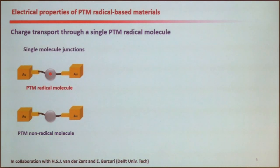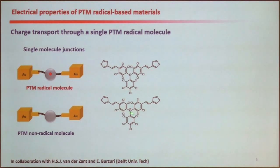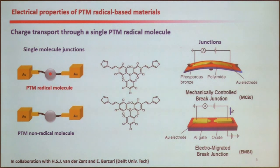Let me show the first example of charge transport through one of these single radical molecules. For that, we synthesized two molecules: the radical molecule ending with two groups in order to link to gold leads, and also the equivalent non-radical molecule with a hydrogen atom at the carbon instead of an unpaired electron — in order to compare and see what the role of the radical is in the transport. For this study, we collaborated with Herre and Enrique Bursuri, and they used mechanically controlled break junctions and electromigrated junctions.